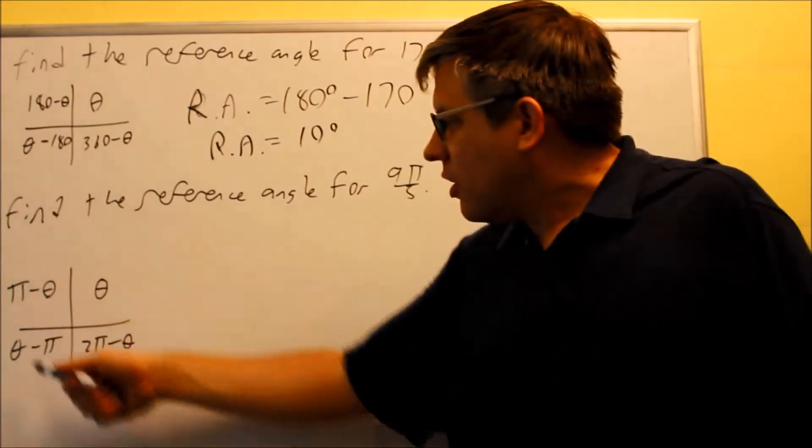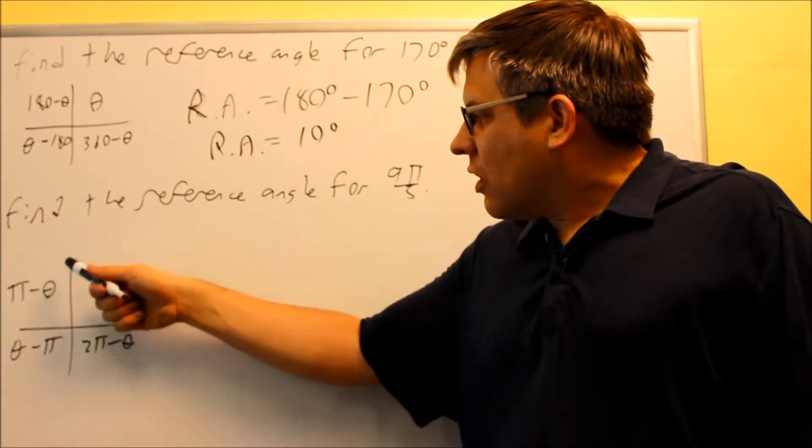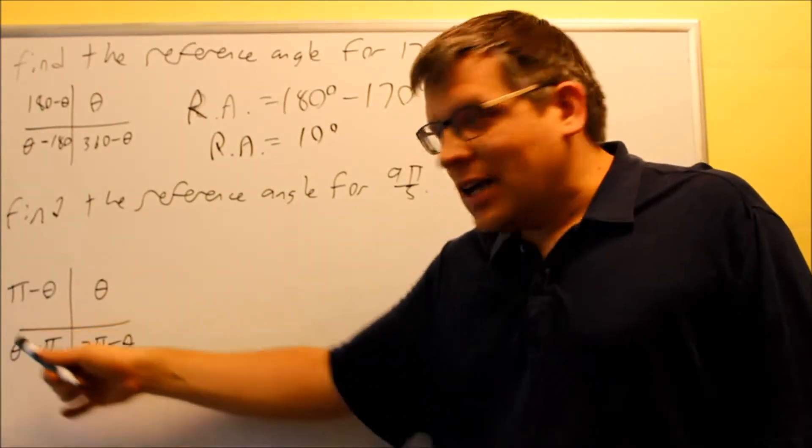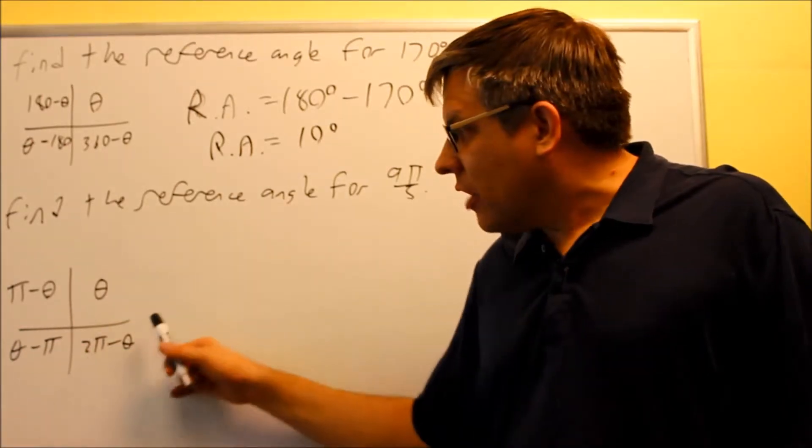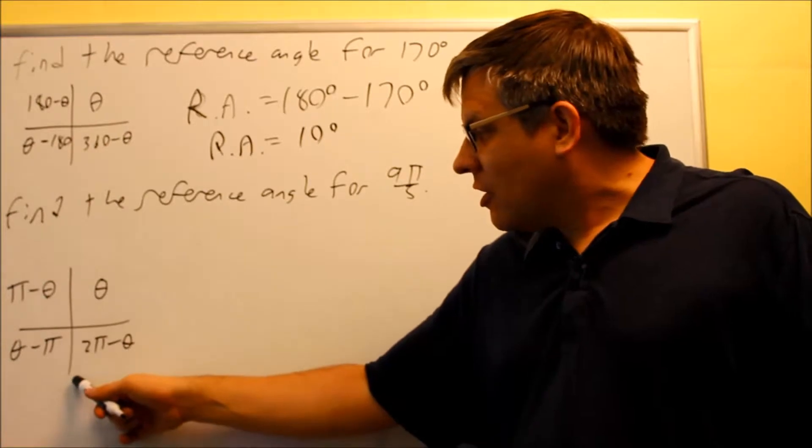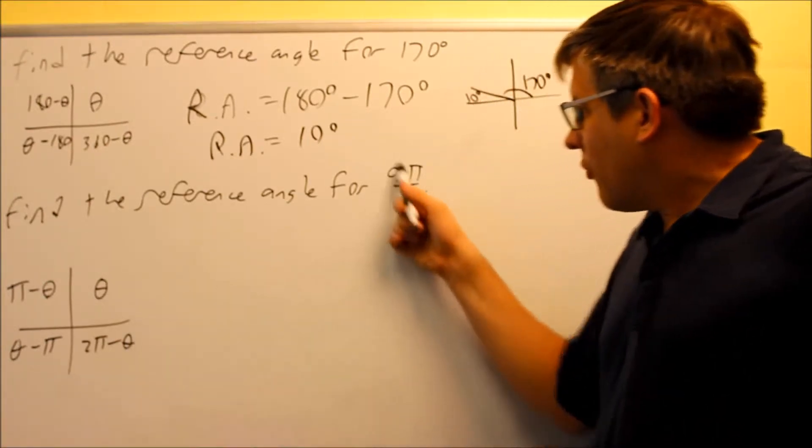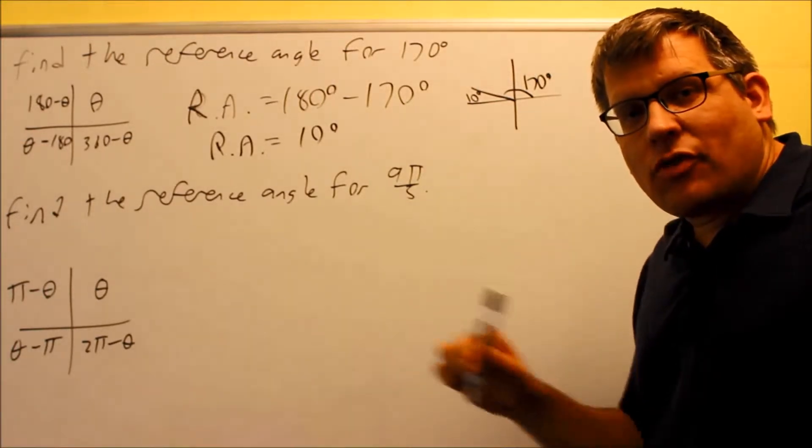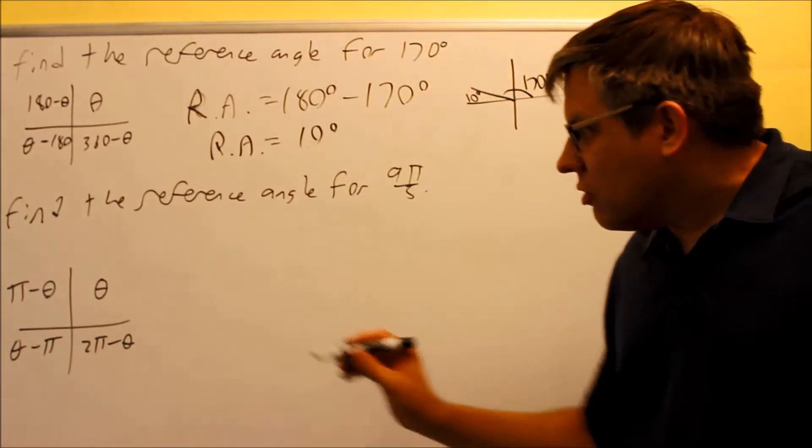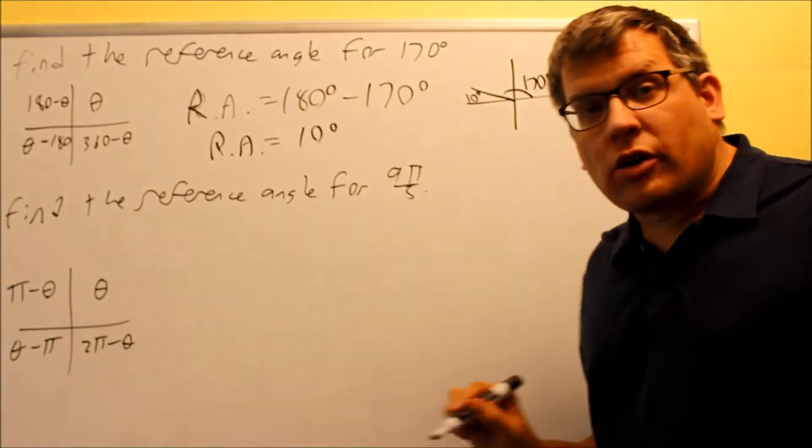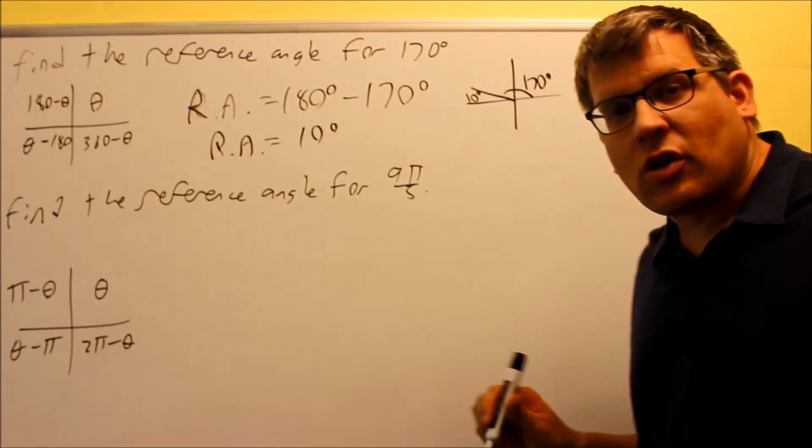So if I look at my chart here, this is going from 0, pi over 2, that's pi, 3 pi over 2, and 2 pi. So 3 pi over 2 would be about 1.5, and then we have 2. The fraction 9 over 5, that number, that fraction itself, is between 3 halves and 2. So that would tell us that we have to use the, that's in the fourth quadrant, which means we need to use this for our reference angle formula.